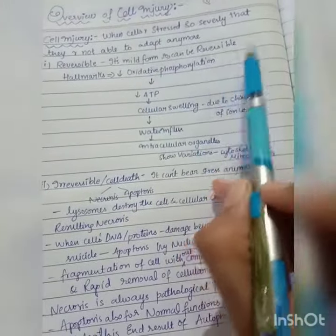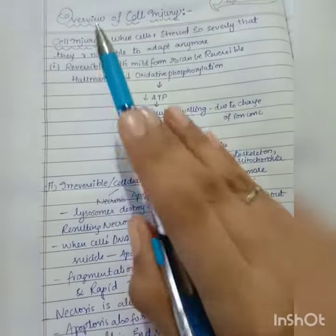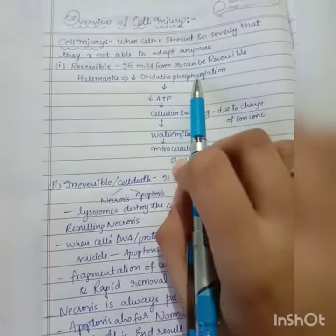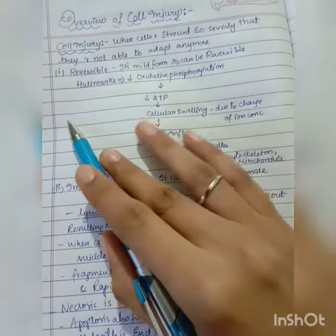Reversible means it's a mild form that can be easily reversed. The main hallmarks are important here. That is decrease in oxidative phosphorylation, which takes place in the mitochondria.